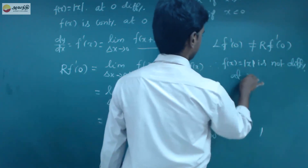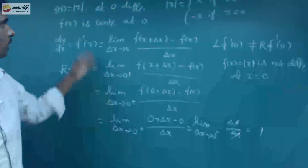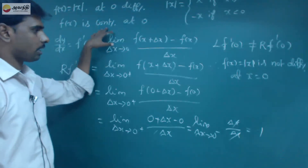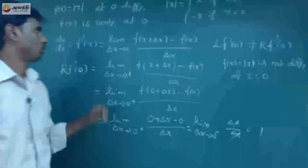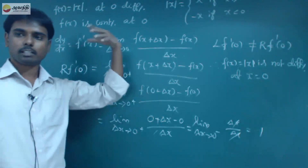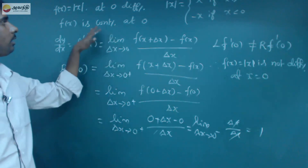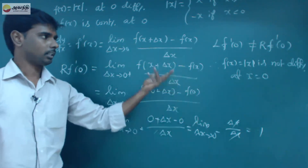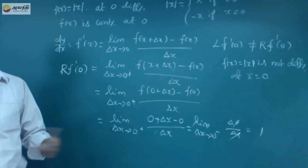At x = 0, f(0) = 0, so the function is continuous. But it is not differentiable. This justifies what we said: if a function is differentiable it is continuous, but if it is continuous it is not necessarily differentiable.